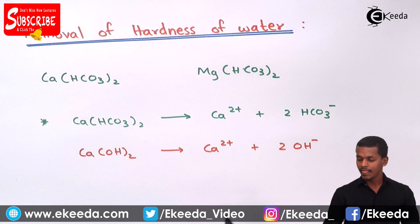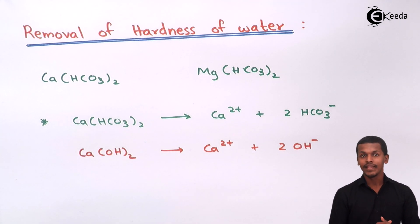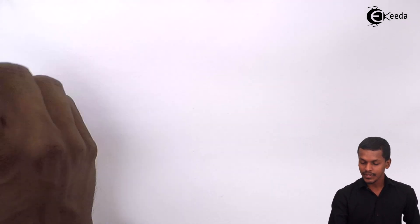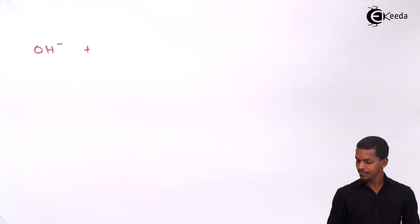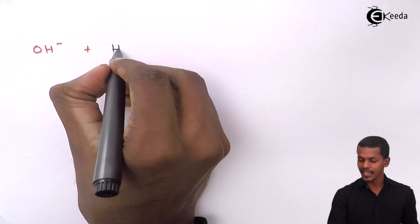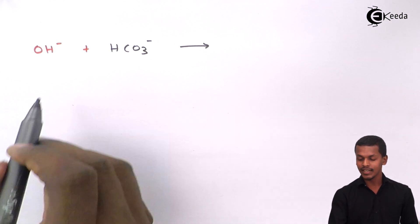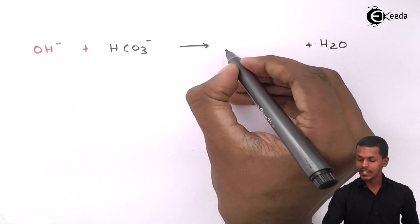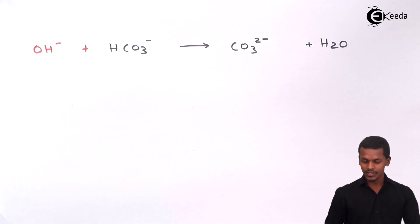There will be a reaction between the bicarbonate ion and the OH⁻ ion. The OH⁻ will react with the bicarbonate HCO₃⁻. When this reaction happens, H₂O is formed, and CO₃²⁻ is also formed.